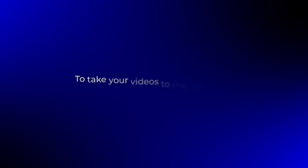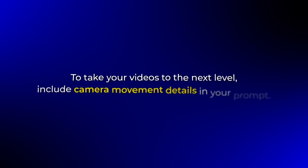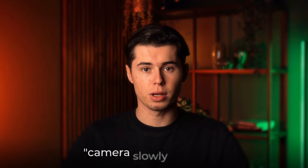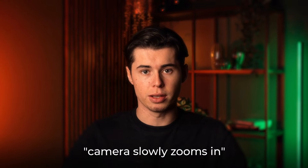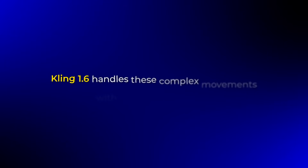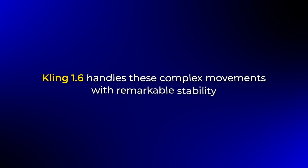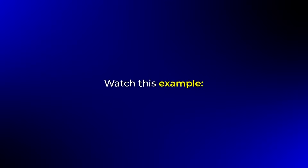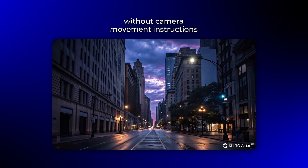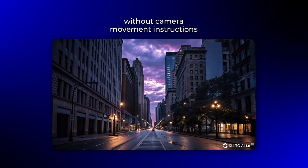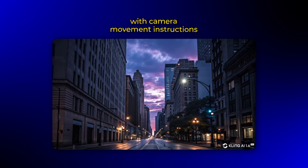To take your videos to the next level, include camera movement details in your prompt. Specify things like 'camera slowly zooms in' or 'smooth tracking shot.' Kling 1.6 handles these complex movements with remarkable stability — no more unpredictable camera work. I'll generate the same scene with and without camera movement instructions. The difference is striking.